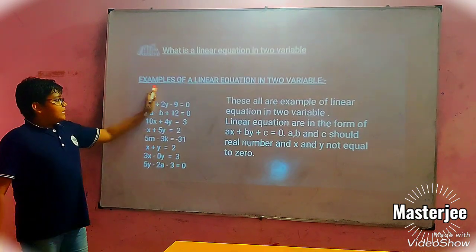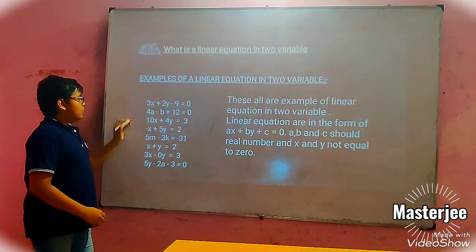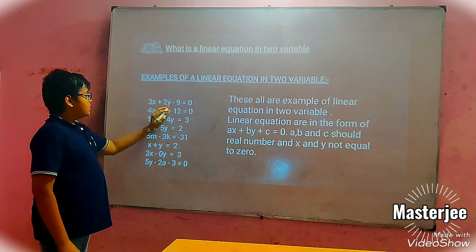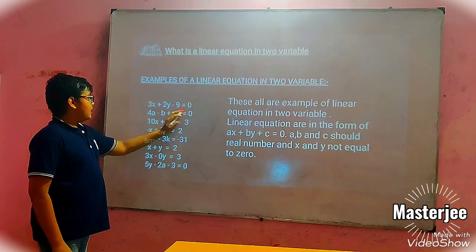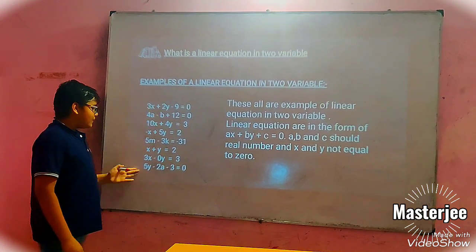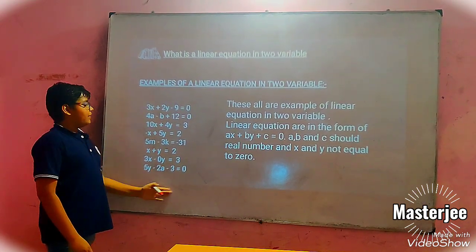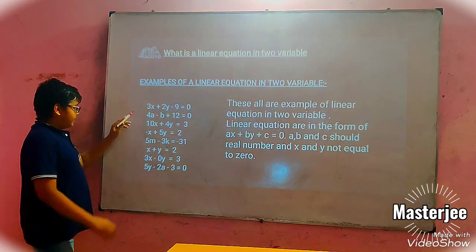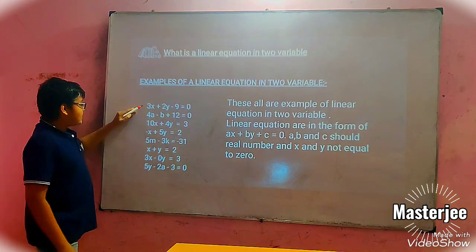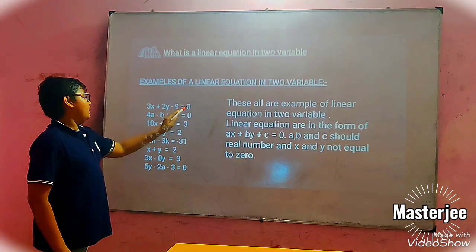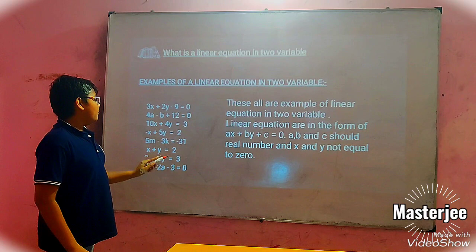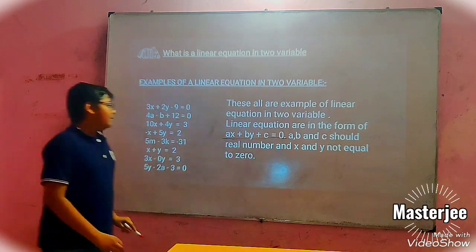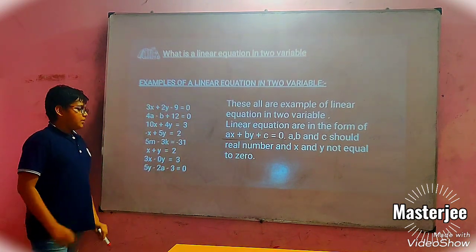Here are some examples of linear equations in 2 variables: 3X plus 2Y minus 9 equals 0. These all are examples of linear equations in 2 variables. It is said to be a linear equation in 2 variables if it is in the form of A plus B minus C equal to 0.